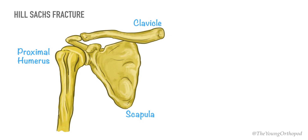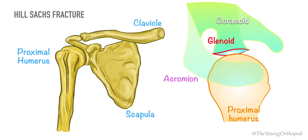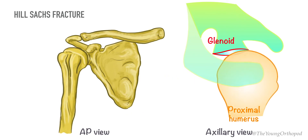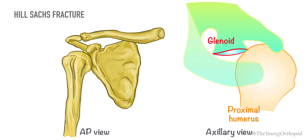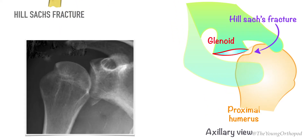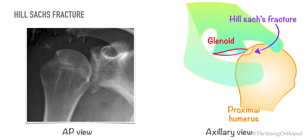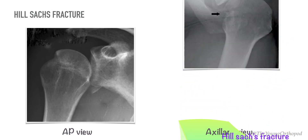The Hill-Sachs fracture is a cortical indentation on the posterolateral aspect of the humeral head, seen in cases of recurrent anterior dislocation of the shoulder joint. It is a compression fracture due to the humeral head being forced against the anterior glenoid rim when it dislocates anteriorly. It is named after Harold Arthur Hill and Maurice David Sachs, who first described this lesion.